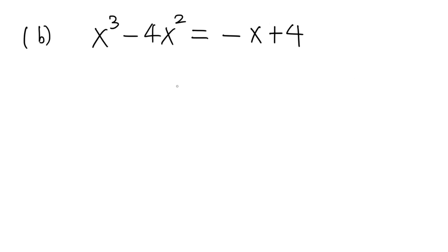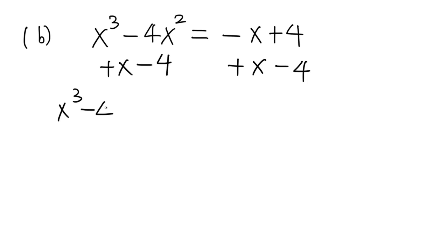Okay, now I'm going to show you another example. The first step is to make the right-hand side 0. So I'm going to add x and subtract 4 and do the same thing to the left-hand side. So then we have x to the third minus 4x squared plus x minus 4 equals 0. Now we want to factor the left-hand side.